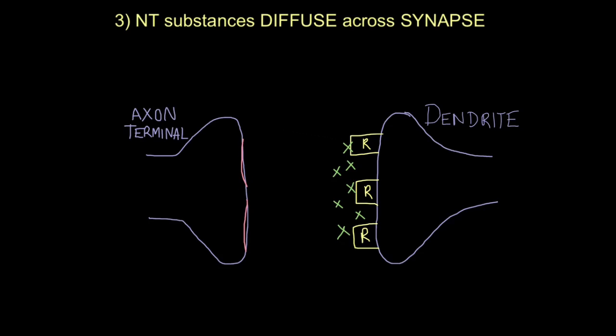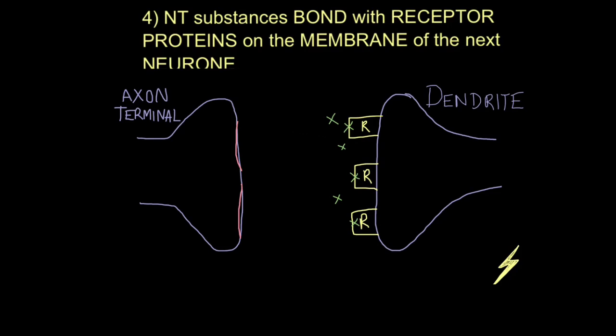You can also see on this side that the vesicle membranes have actually become part of the cell membrane of the axon terminal. This is what we mean by fuse. So by becoming part of it, they've ejected their contents into the synapse, which is then diffused across. So once the neurotransmitters have diffused across the synapse, they bond to proteins embedded on the cell membrane of the dendron, or dendrite, and they basically bond to these receptor proteins, receptor molecules, and once they do that, an electrical impulse is generated in the next neuron and gets transmitted along it.